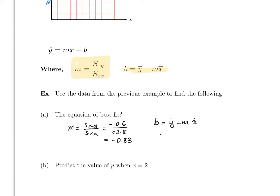Then b = y-bar minus m times x-bar = 6.4 − (−0.83)(2.8). Remember that minus times minus gives plus, so when you simplify this you get approximately 8.72.